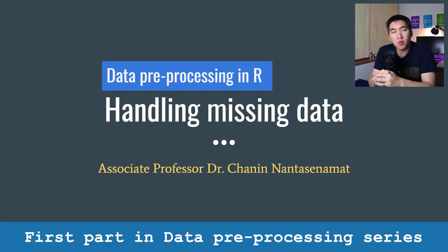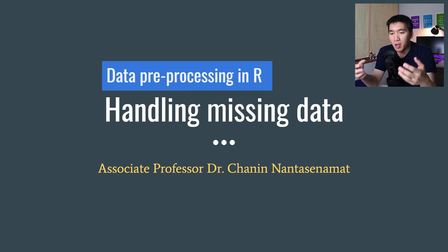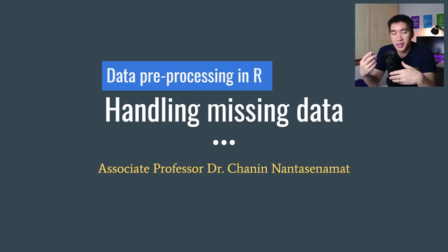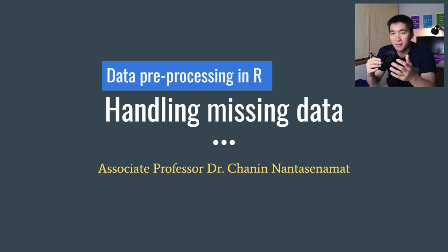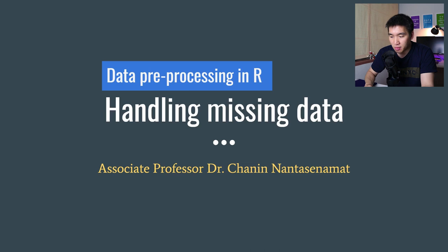This episode represents the first part in a multi-part series on data pre-processing in R. We're going to start by talking about how we can handle missing data. When pre-processing data, it is very common that some values are missing — meaning they're empty, or they might have obscure values such as a question mark or minus 999.